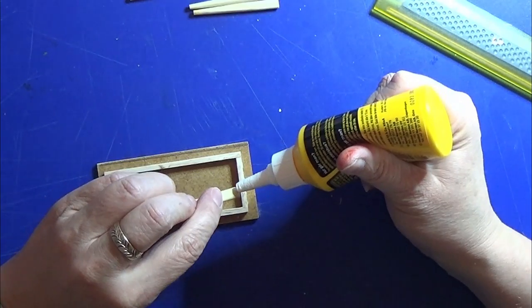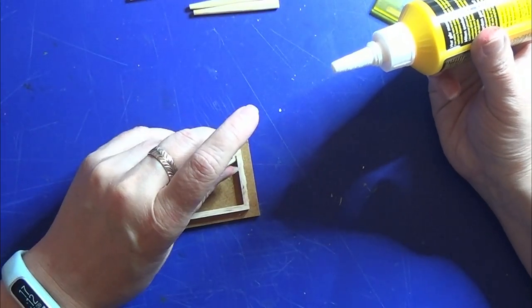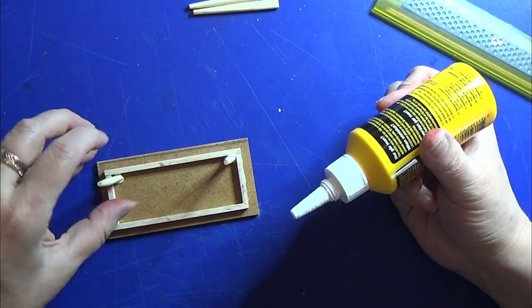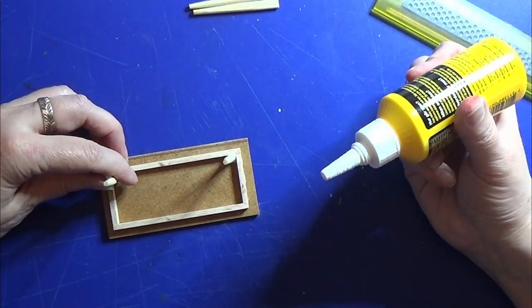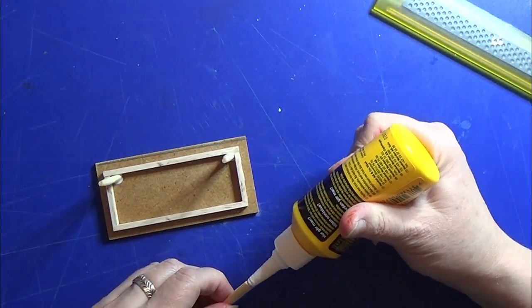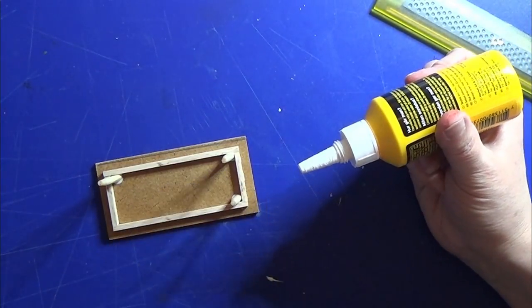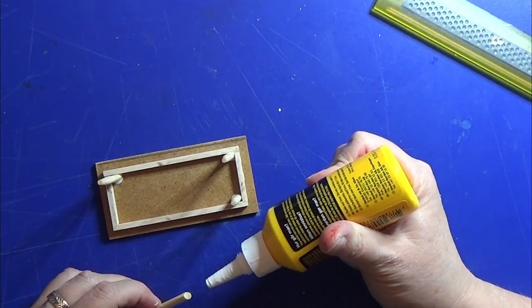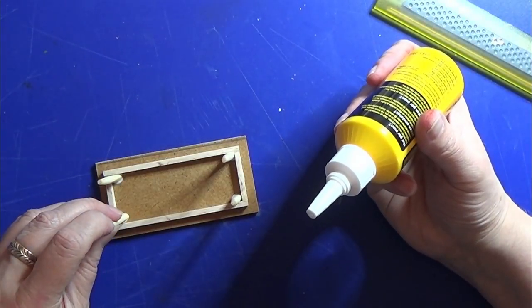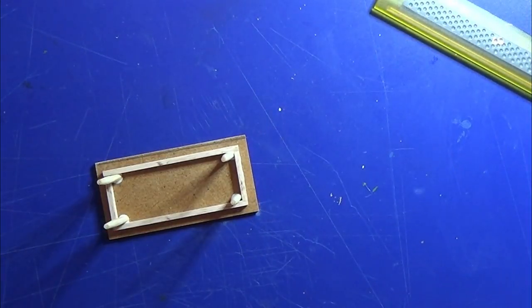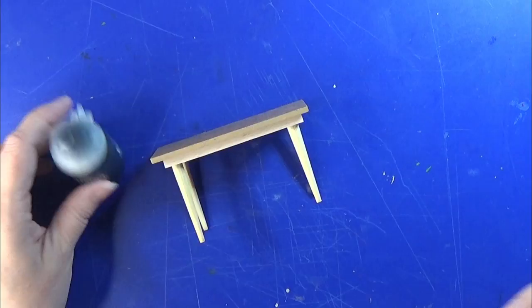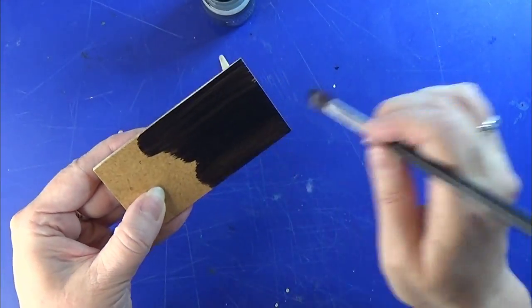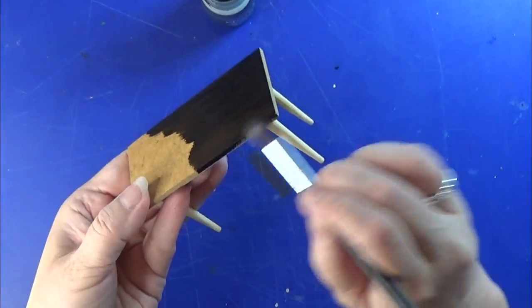When the glue is all dry I am going to glue in all four legs, one in each corner, and again I'm going to let this dry all up. When the glue is all dry I am going to paint this little table black and I gave it two or three coats. I let that dry and then I gave it a tiny bit of glaze to make it a little more shiny than this paint was.